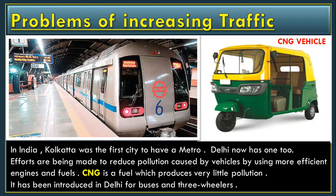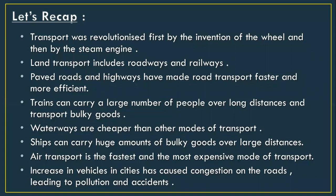To summarise: road transport includes roadways and railways. Paved roads and highways have made road transport faster and more efficient. Trains can carry a large number of people over long distances and transport bulky goods. Waterways are cheaper than other modes of transport — ships can carry huge amounts of bulky goods over large distances. Air transport is the fastest and the most expensive mode of transport. Increases in vehicles in cities has caused congestion on roads, leading to pollution and accidents.